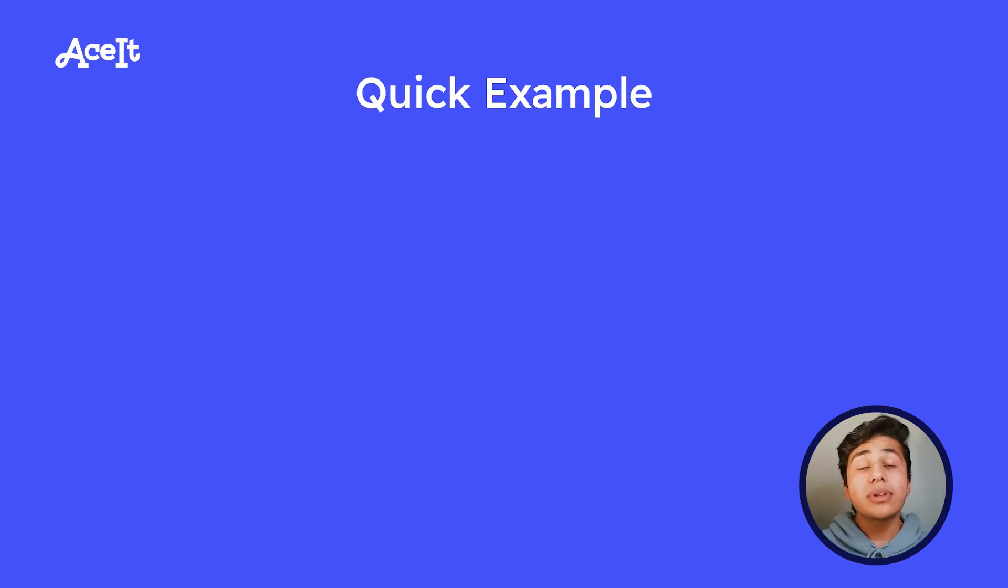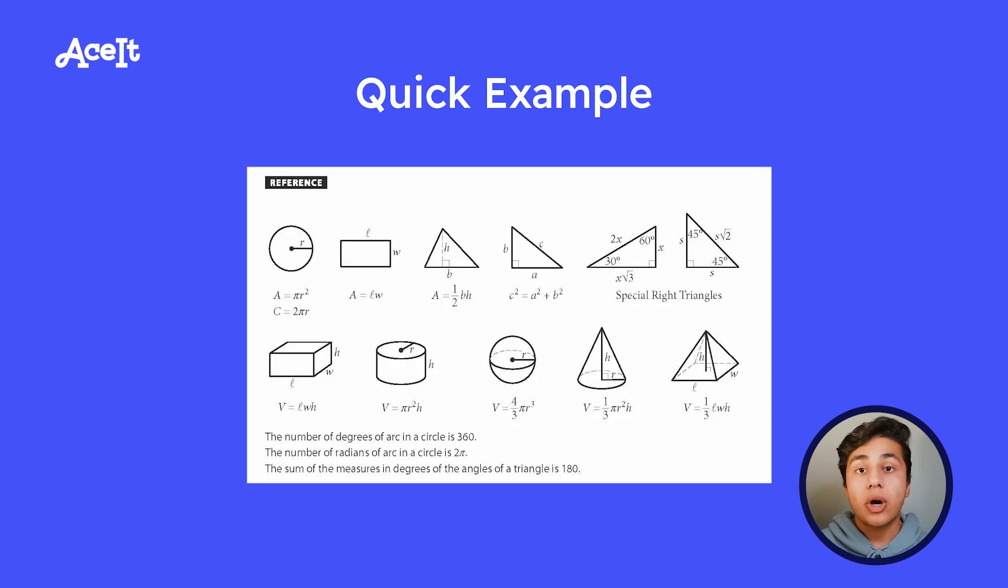For the most part, whenever you see a volume SAT question, all you have to do is plug in the given numbers into the formula that is on your formula sheet. But sometimes it gets a little bit more complicated than just plugging in numbers. Sometimes they're going to be given the volume and be told to solve for something like the radius or a side length or something like that. So let's take a quick look at this example.